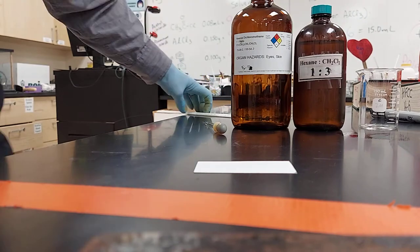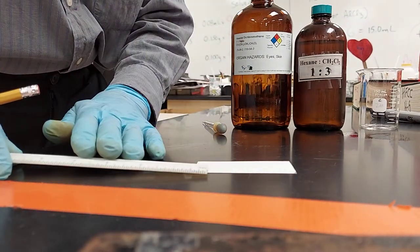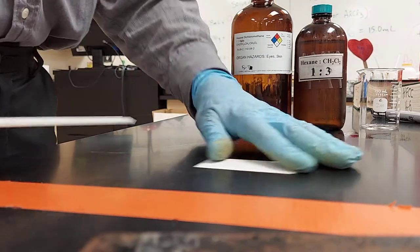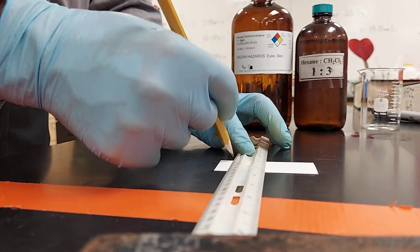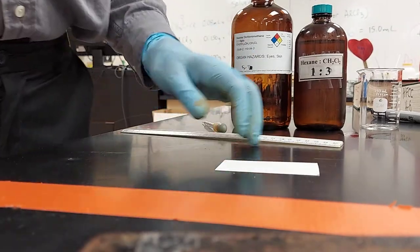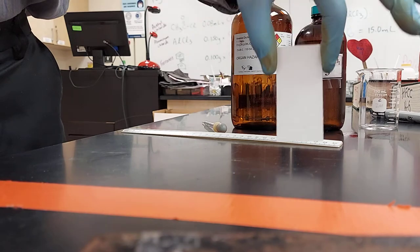We need to set up a line one centimeter from the bottom of a TLC plate. Mark it gently - do not press down. If you press down, you will take off the powder. One centimeter from the bottom.